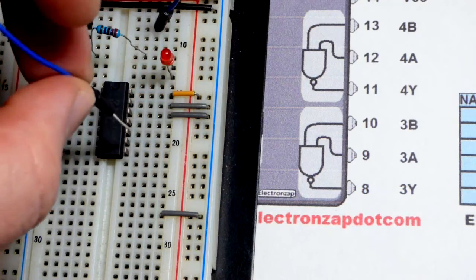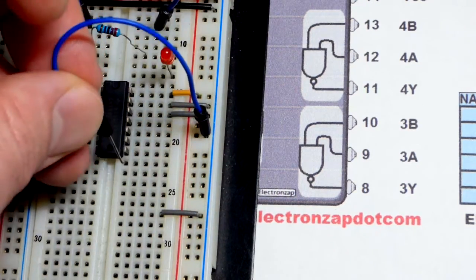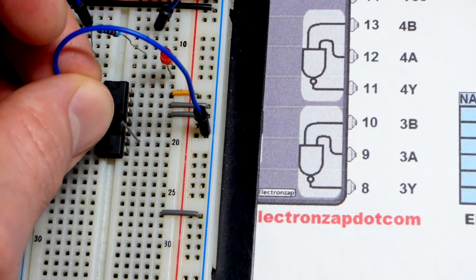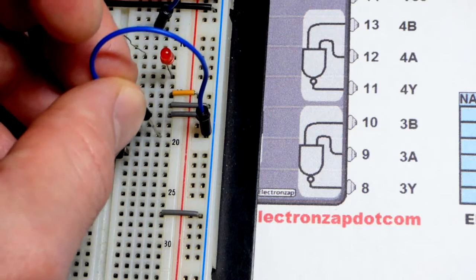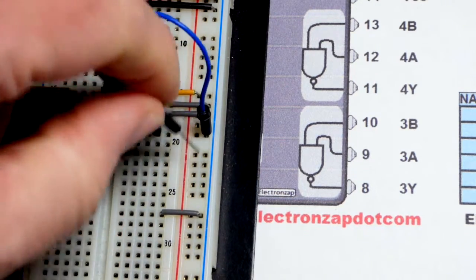So again, to the inputs, we can go directly to the positive rail or the negative rail. And so we got the output there. There's one input. There's the other one. We'll plug that there. And this one right here.